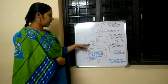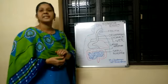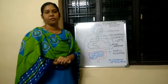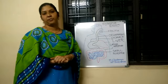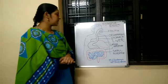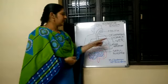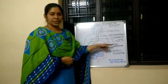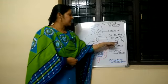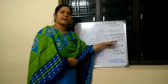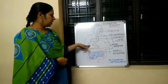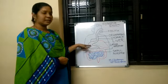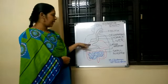The stomach is an elastic bag where the churning and grinding of food takes place. Here, along with the digestive juices which are released from the liver, digestion happens until the food almost becomes a paste.